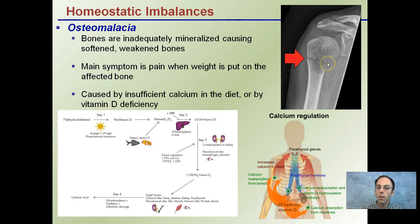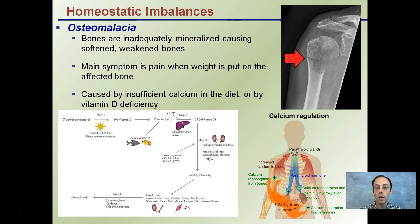What causes osteomalacia is insufficient calcium in the diet or vitamin D deficiency. Insufficient calcium in the diet could mean that the individual is not consuming enough calcium, or the calcium being consumed is not bioavailable to the body — it's not able to be broken down and used in the bones.